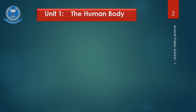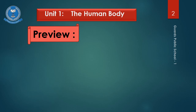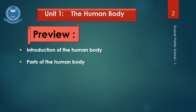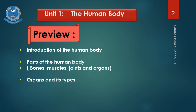Before starting our today's lecture, let's take a preview of lecture number 1. Do you remember what is the human body and how many parts a human body has? The human body is the structure of a human being and it has many parts like bones, muscles, joints and organs. Organs are of two types: external organs and internal organs.